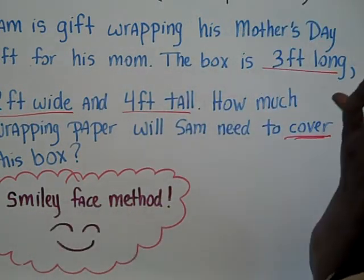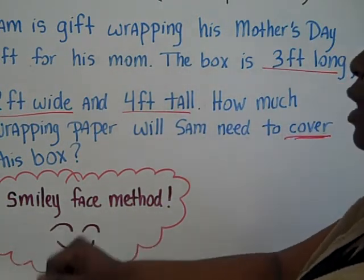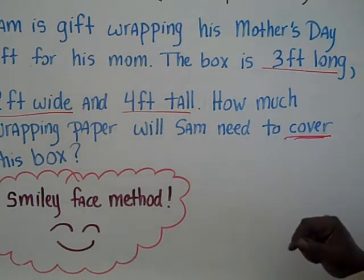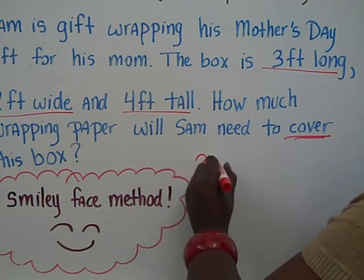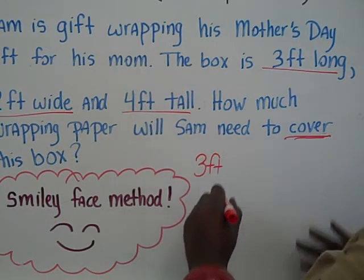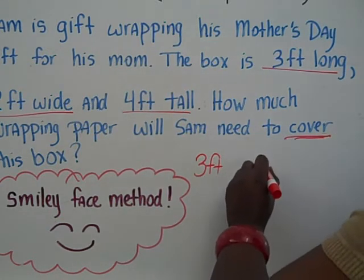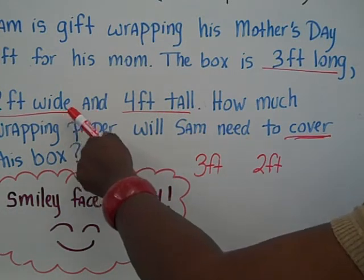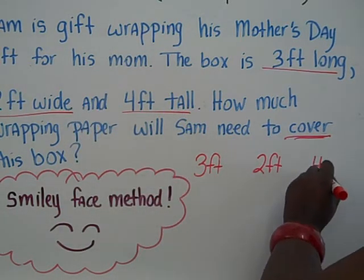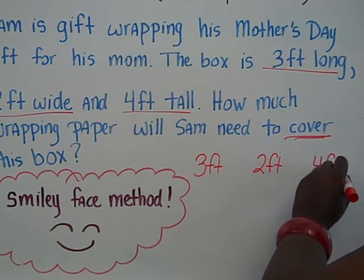Now, I have come up with a method that I like to call the smiley method. Some students prefer that. What that means is that you're going to read the word problem and you draw out the dimensions. We have the 3 feet for the length, the 2 feet for the width, and the 4 feet for the height.